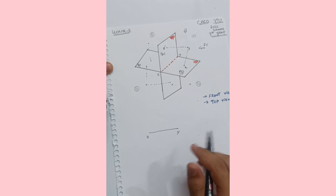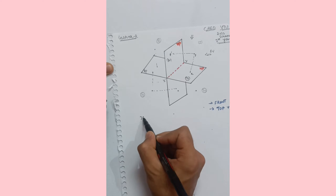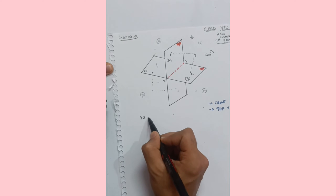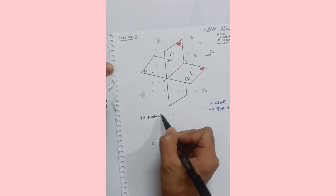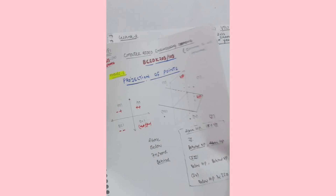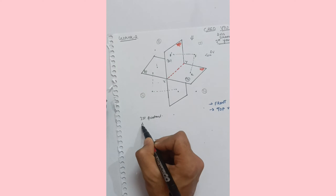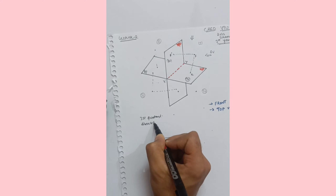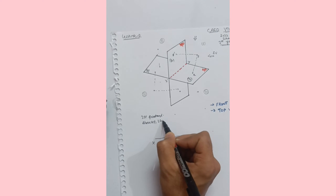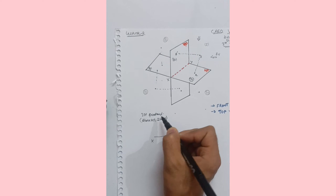Now I will draw this in 2D format. First quadrant: as you already know from the previous lecture, a point in the first quadrant is above HP and in front of VP. Write down these terminologies — above HP and in front of VP.